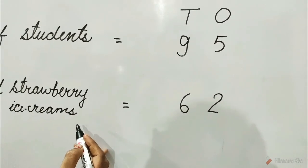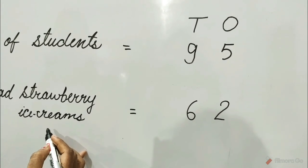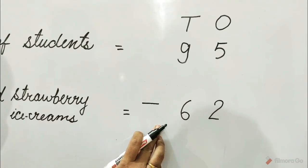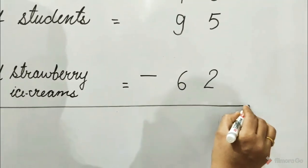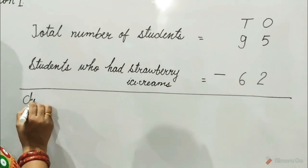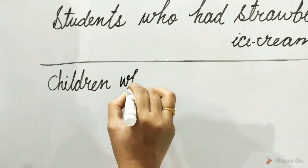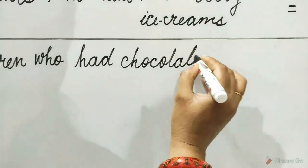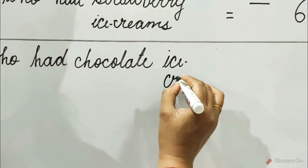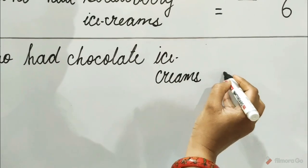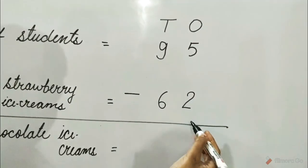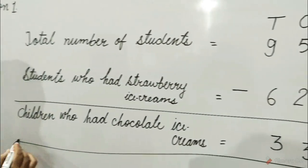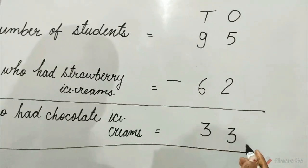Now, to find the total number of children who had chocolate ice creams, we will subtract. Put the sign of subtraction. We will subtract sixty-two from ninety-five. Children who had chocolate ice creams is equal to thirty-three.